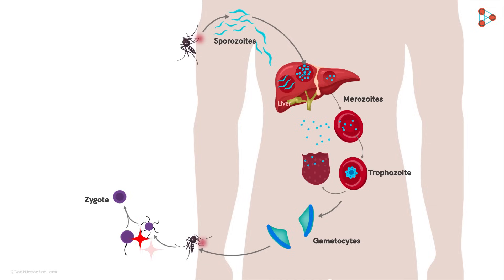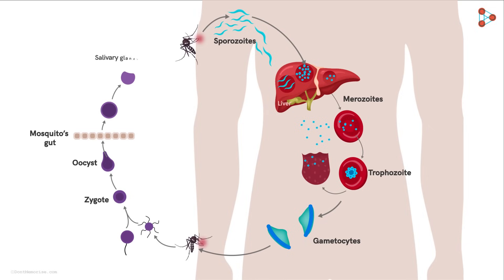The fertilization of these Gametocytes results in the formation and development of a Zygote in the mosquito's gut. From here, a structure called an Oocyst is developed, which crosses the gut wall and reaches the salivary glands. The Oocyst then releases several Sporozoites — the mature infective forms of the parasite — ready to infect a new healthy individual with the next blood meal. So when this female Anopheles mosquito bites a healthy person, the Sporozoites get transmitted, thus repeating the complete cycle and causing the infection.